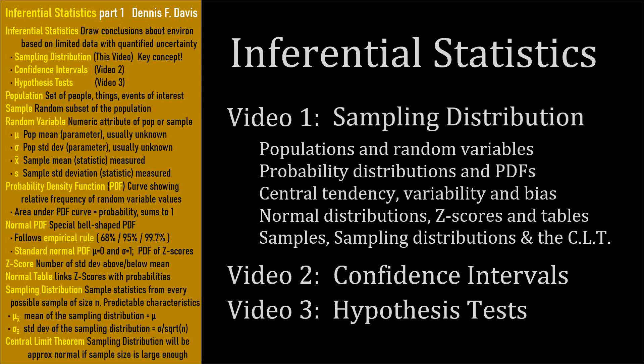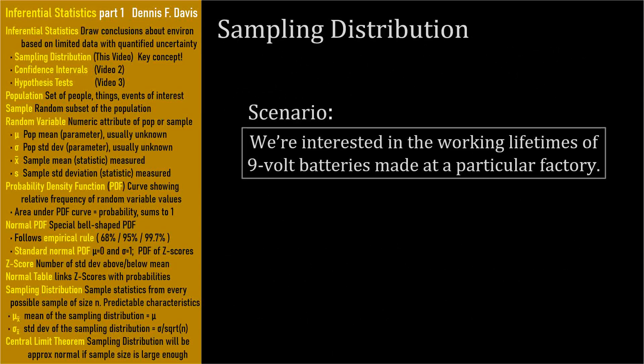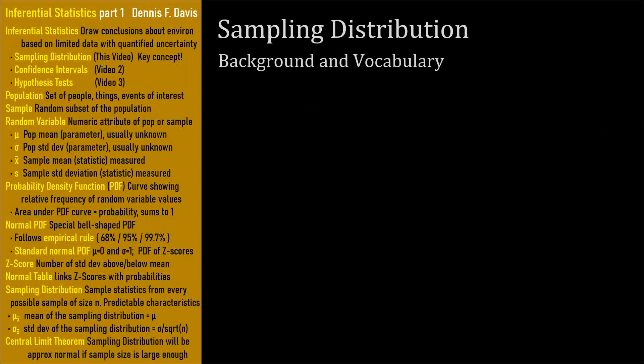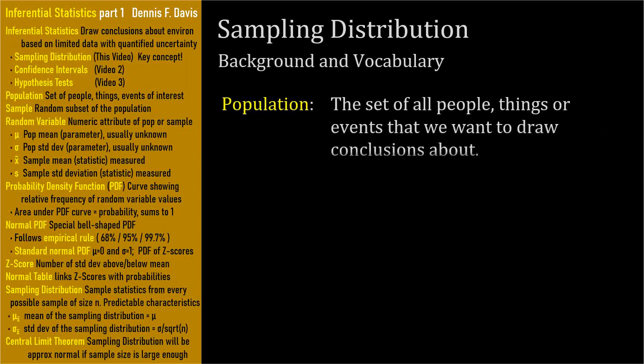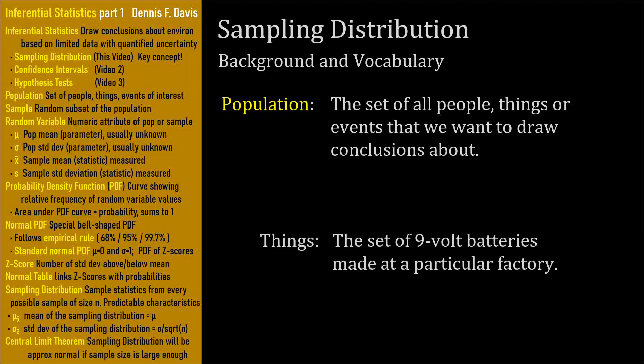The scenario we'll use throughout this series is a factory that makes 9-volt batteries, and we're interested in the working lifetime of these batteries when they're under heavy use. A population is the set of all people, things, or events that we want to know something about. In our scenario, it's things — the set of all 9-volt batteries made at a particular factory.